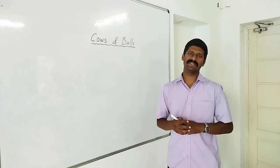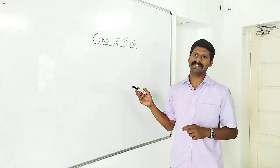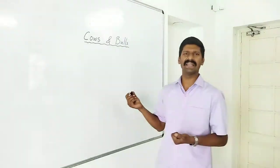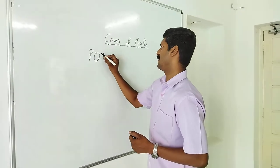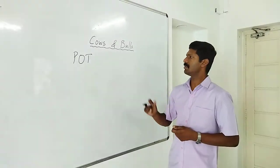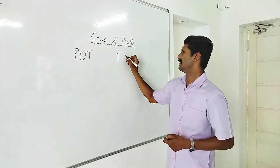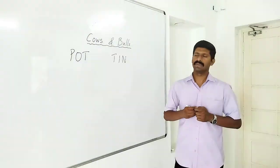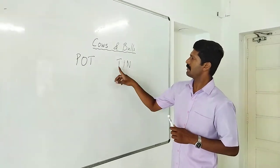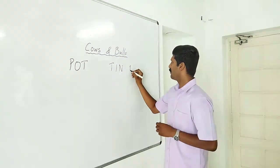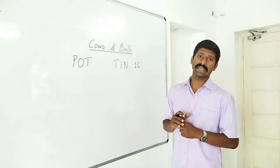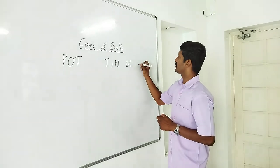Good morning teachers. This is a word guessing game. We will start with a simple 3-letter word. Now, let's say I have to give you a score. Cows means the letter is correct but the position is not. For example, T is the correct letter but in the wrong position, so I will give you one cow. Bull means bullseye — the letter is correct and the position is correct.